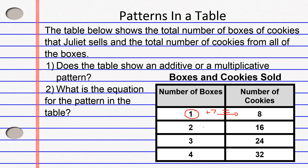Let's try 2. Does 2 plus 7 equal 16? No — 2 plus 7 is equal to 9, not 16. So we know it cannot be an additive pattern, because we cannot add the same number to all of the numbers on the left-hand side to get to the numbers on the right-hand side.